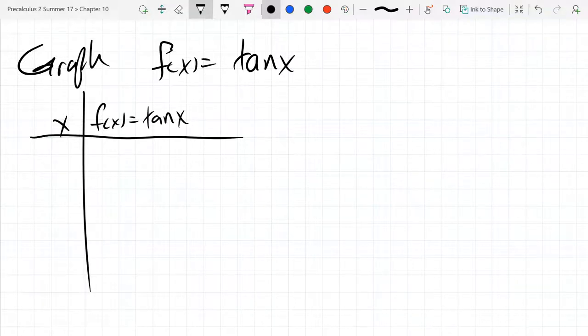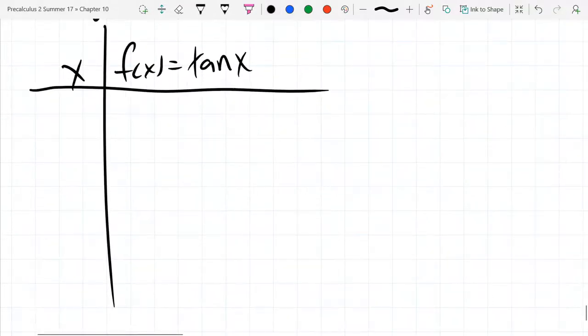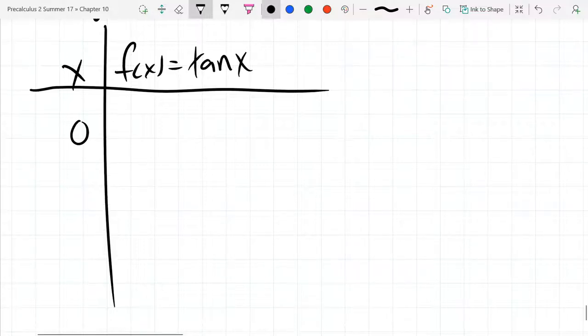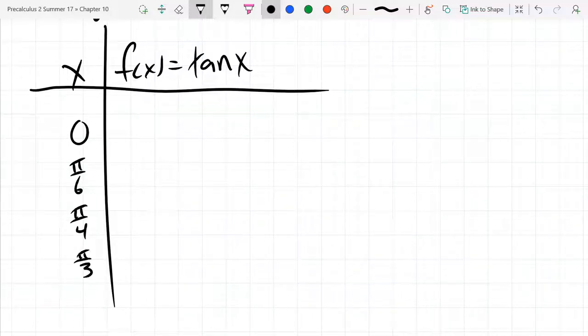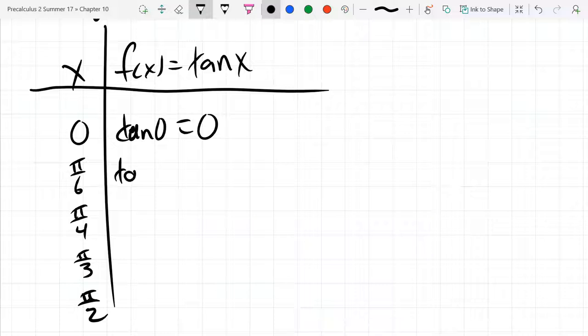So I'm gonna take the exact same x values that we took before, which are basically the small ones starting at zero going the positive direction. So I'm gonna tan. Tan zero is zero. Tangent can be a little trickier to memorize. Just remember it's sine over cosine, and if you can remember sine and cosine values, you get the tangent values.